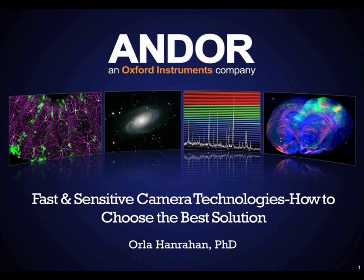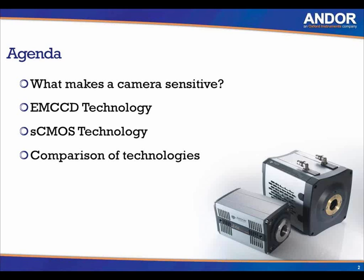I'm going to talk about different camera technologies — fast and sensitive camera technologies and how to choose the best solution. The agenda covers: what makes a camera sensitive, then EMCCD technology, followed by CMOS technology, and then a comparison of the various technologies, which will help in decision making when it comes to purchasing a camera.